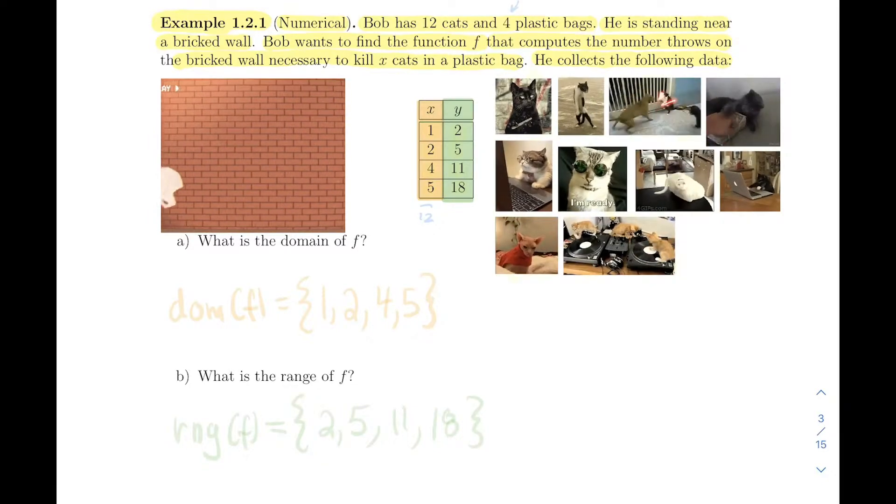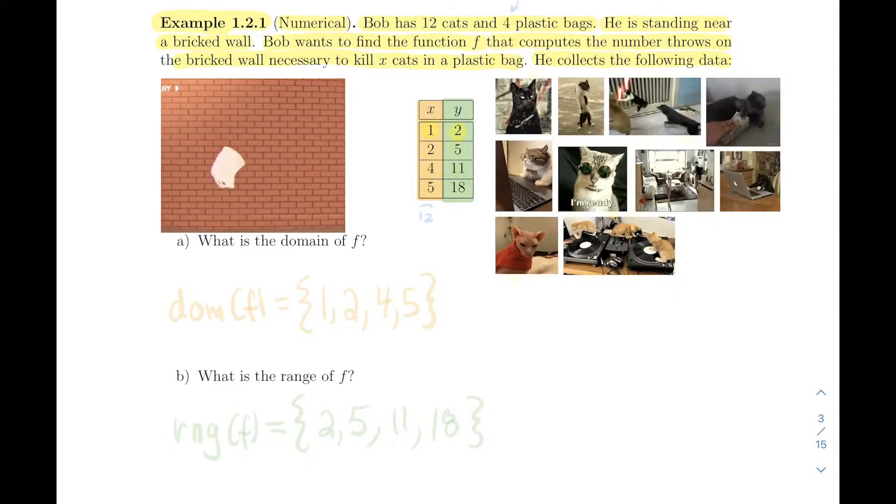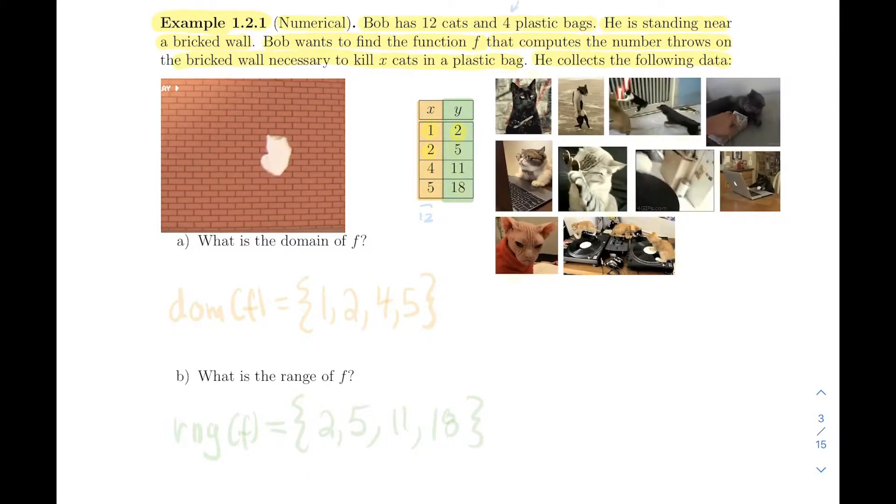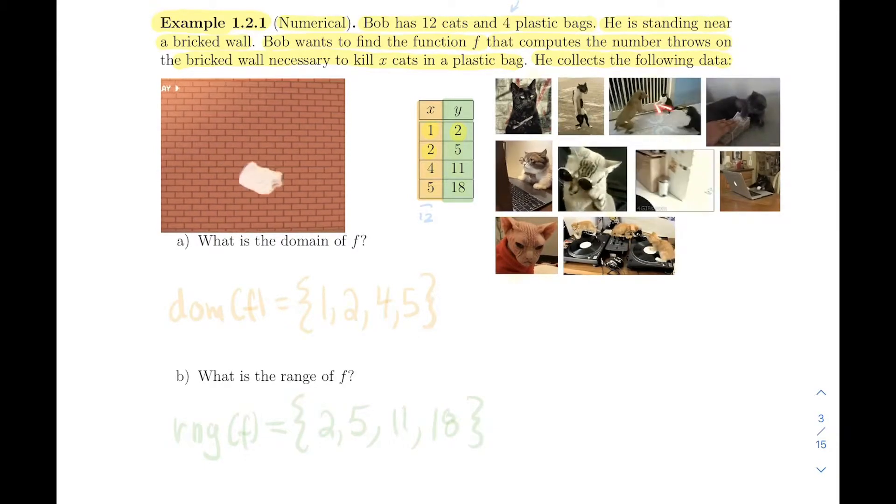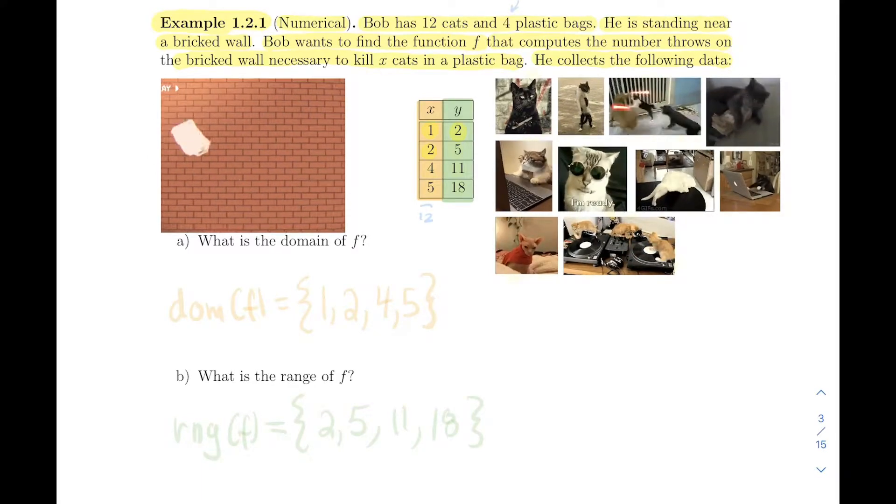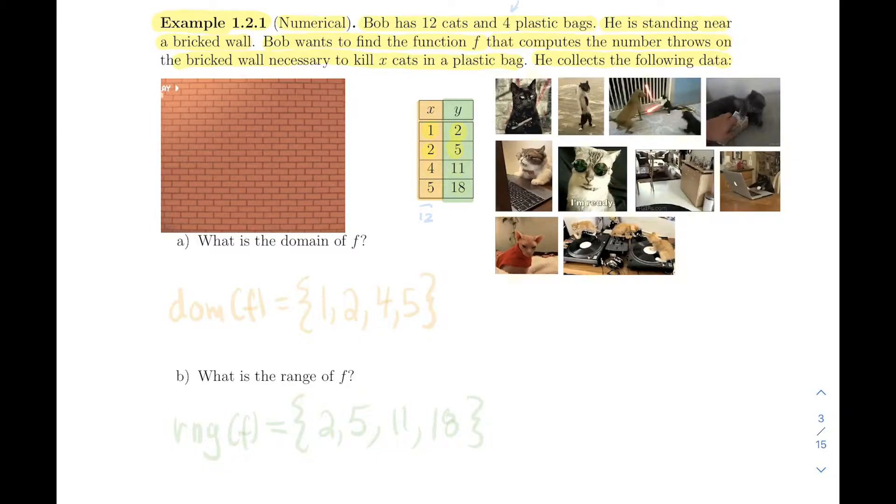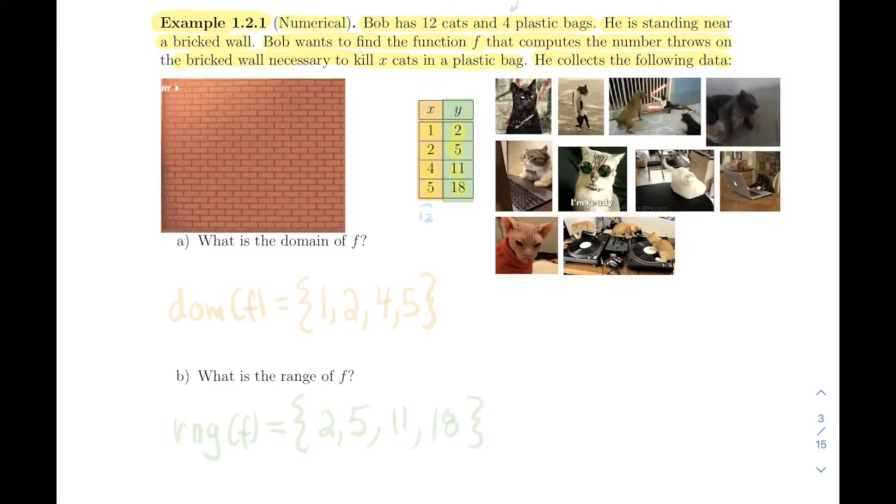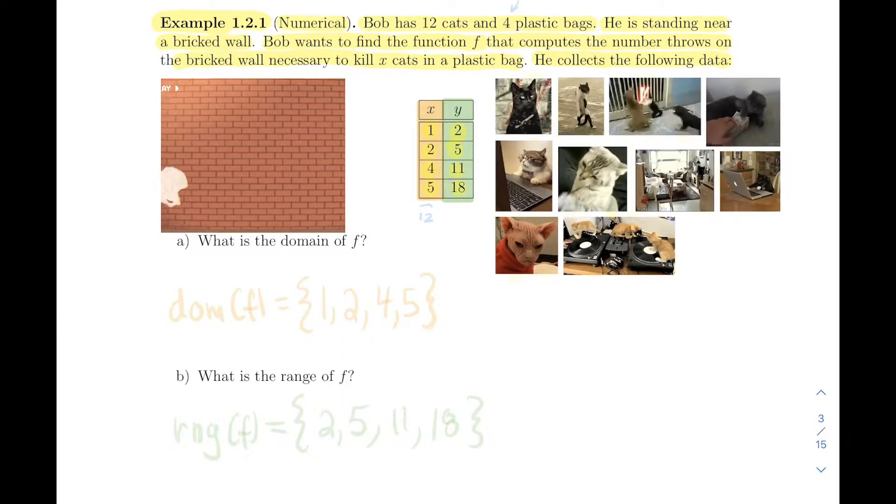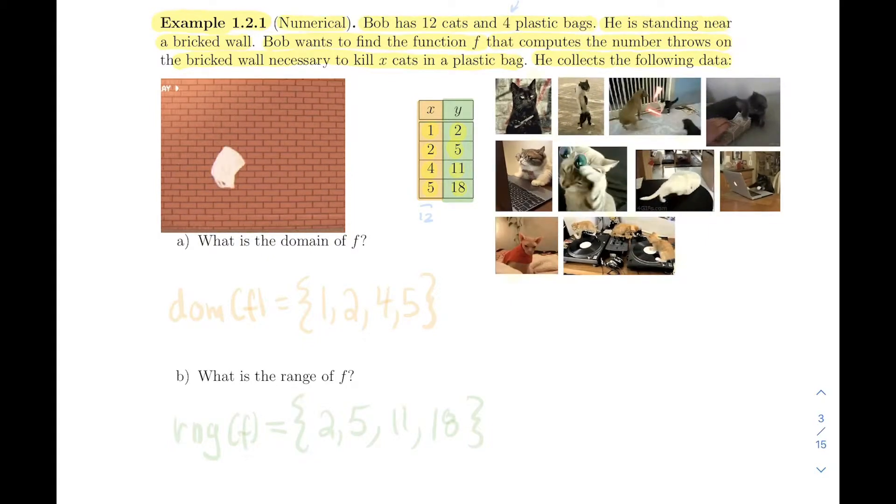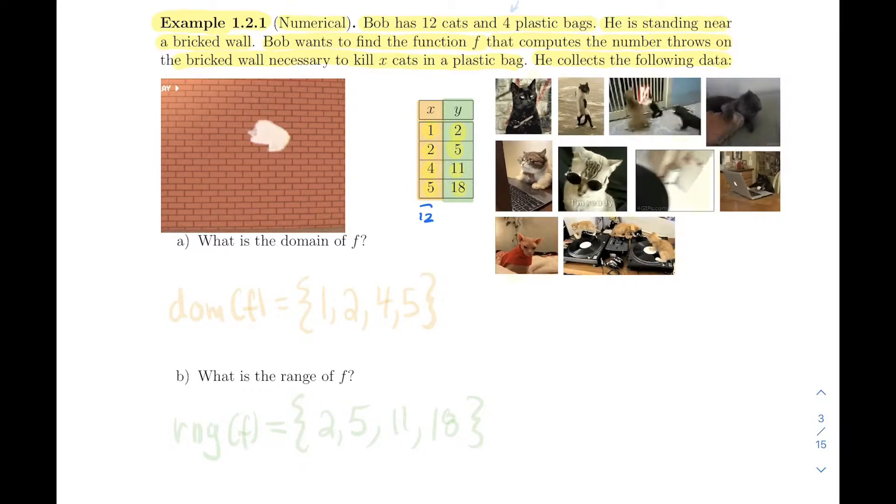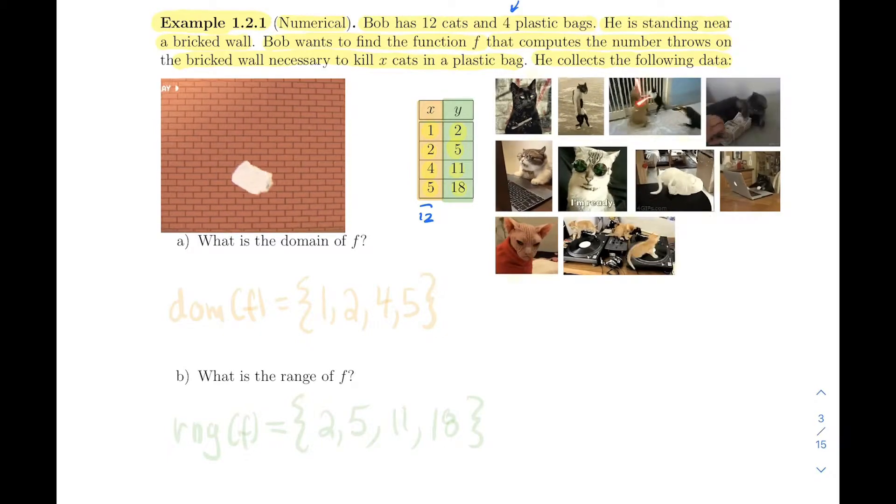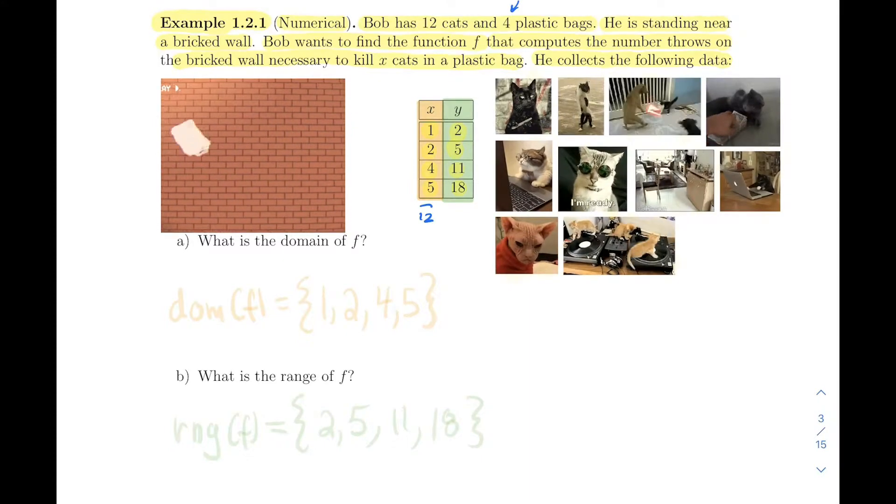I collect the following data. For one cat in the bag, I need two throws in order to kill it. If I have two cats in the bag, what happens is there's this airbag effect where the other cats, if they collide on a cat before colliding on the wall, it kind of survives. So I need five throws to kill two cats. If I have four cats in the bag, I need 11 throws. And if I put five cats in a bag, I need 18 throws. One plus two plus four plus five, that's my 12 cats. I cannot continue with this experimentation, and I need a clean bag every time I start again.